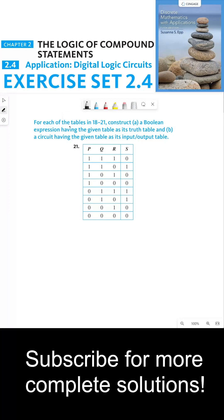For each of the tables in 18 through 21, construct a Boolean expression having the given table as its truth table and B, a circuit having the given table as its input-output table.